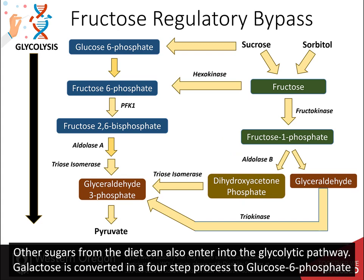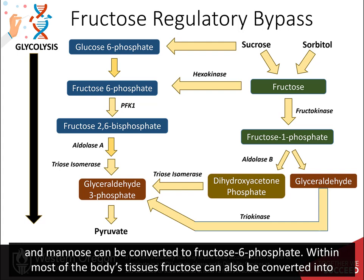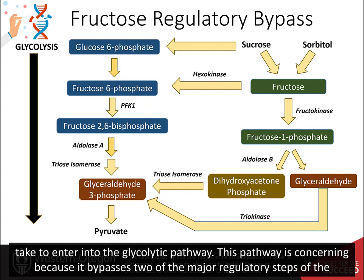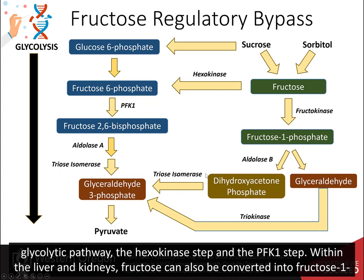Other sugars from the diet can also enter into the glycolytic pathway. Galactose is converted in a four-step process to glucose-6-phosphate, and mannose can be converted to fructose-6-phosphate. Within most of the body's tissues, fructose can also be converted to fructose-6-phosphate by hexokinase. However, in the liver and kidneys, there is an alternative route that fructose from the diet can take to enter the glycolytic pathway. This pathway is concerning because it bypasses two of the major regulatory steps: the hexokinase step and the phosphofructokinase-1 step.